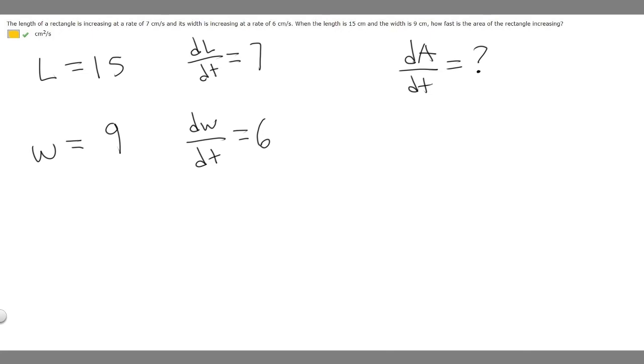So the formula for the area of a rectangle is area equals length times width. And then so in order to solve this, what we should do is differentiate this side, because what we're trying to find is dA/dt. And if we differentiate A with respect to T, it'll become dA/dt. And then all we got to do is differentiate this side and then plug in our variables, and we'll get our answer.